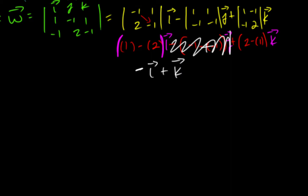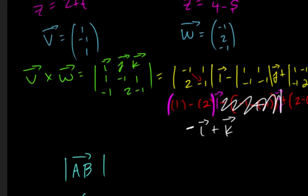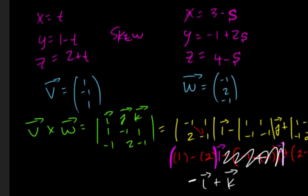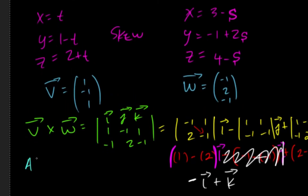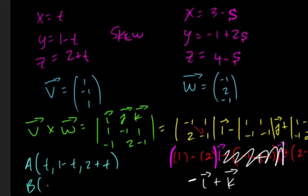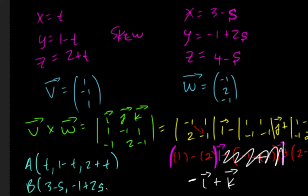Now we're going to let A and B be points on the skew lines such that the magnitude of AB is the shortest distance between them. Point A is going to be (t, 1 - t, 2 + t) and point B is going to be (3 - s, -1 + 2s, 4 - s).